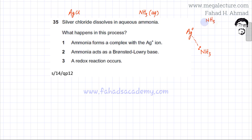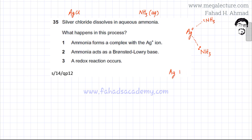Another NH3 molecule also bonds with the silver ion. At the end of the day, a complex ion is formed: one silver ion bonds datively with two NH3 molecules, and the overall complex ion has a charge of plus one.